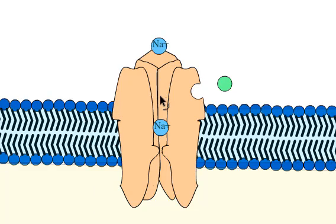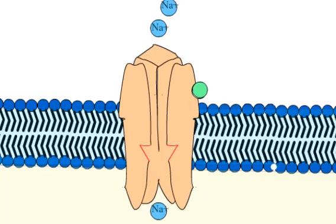They open to allow ions such as sodium, potassium, calcium, or chloride to pass through the membrane in response to the binding of a chemical messenger called a ligand.